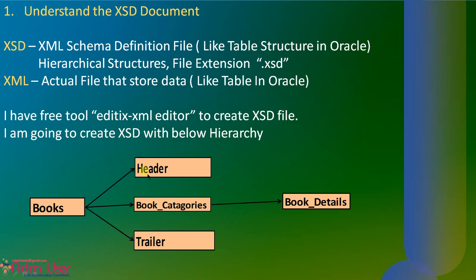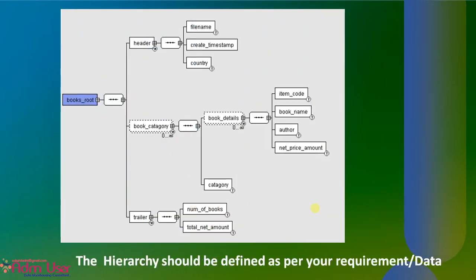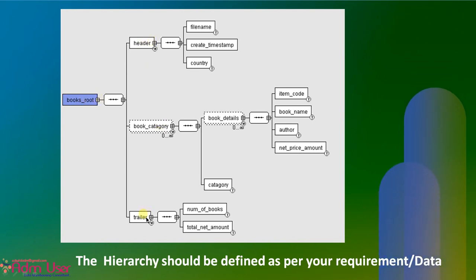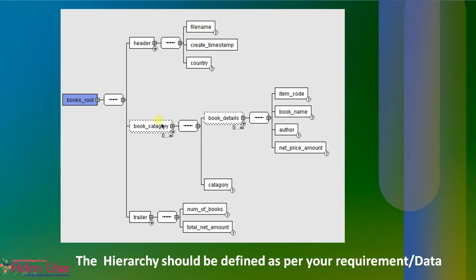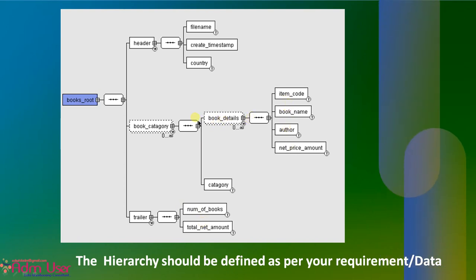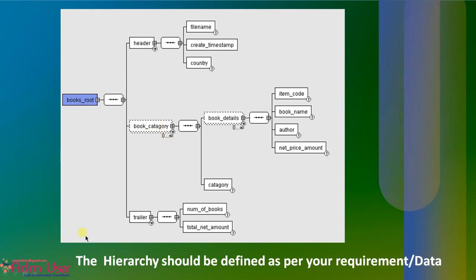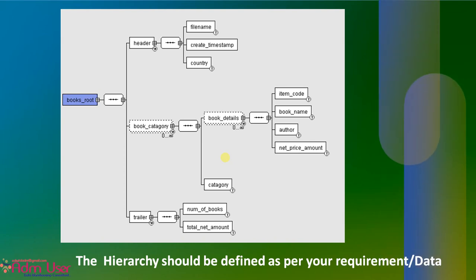Books is the root section. Under books I have three sections: header, book categories, and trailer. Under book categories I have the book detail section. I created this XSD from the tool using a GUI interface. On the root element I have header, book category, and trailer. The header section has three columns, book category has one column, and trailer section has two columns. Under book details I have a child section with four columns. Dotted lines mean maximum occurrences are unbounded — it will repeat in a one-to-many relationship.